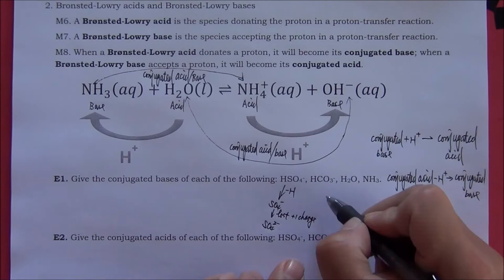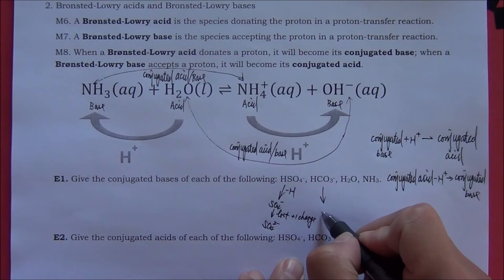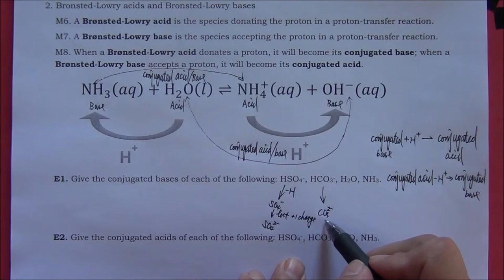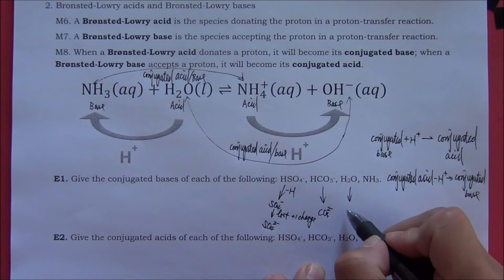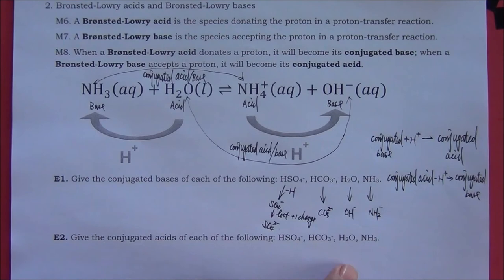For bicarbonate, the conjugate base should be CO₃²⁻, which is carbonate. Similarly, we can get the conjugate base for water, which is hydroxide. These species are the conjugate bases of the corresponding conjugate acids.